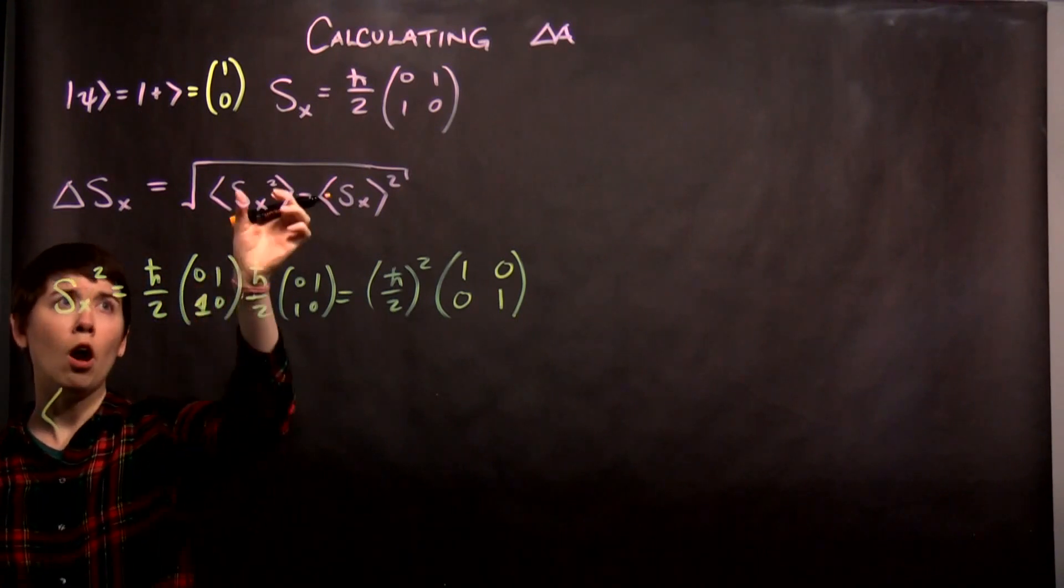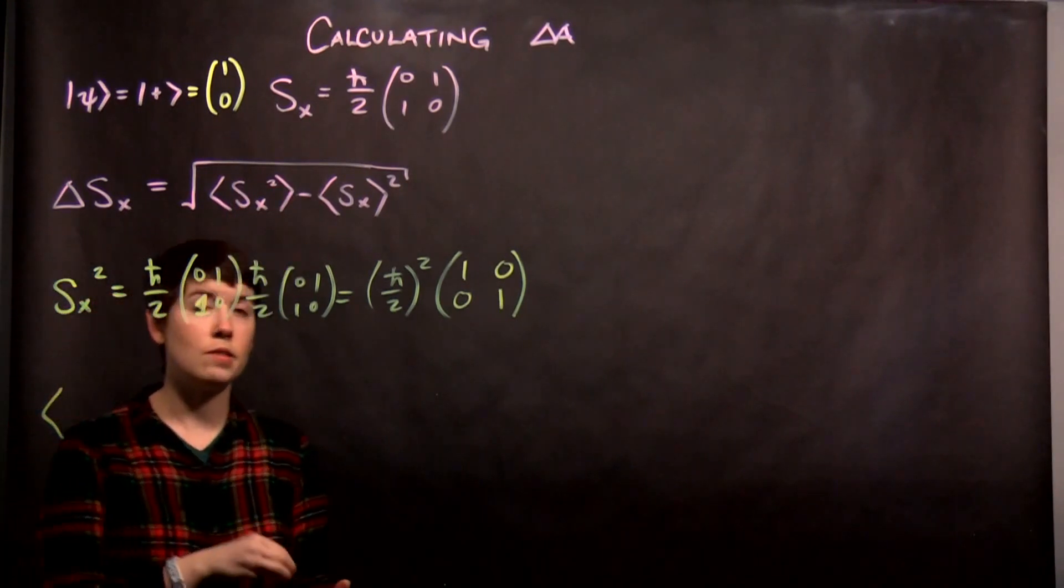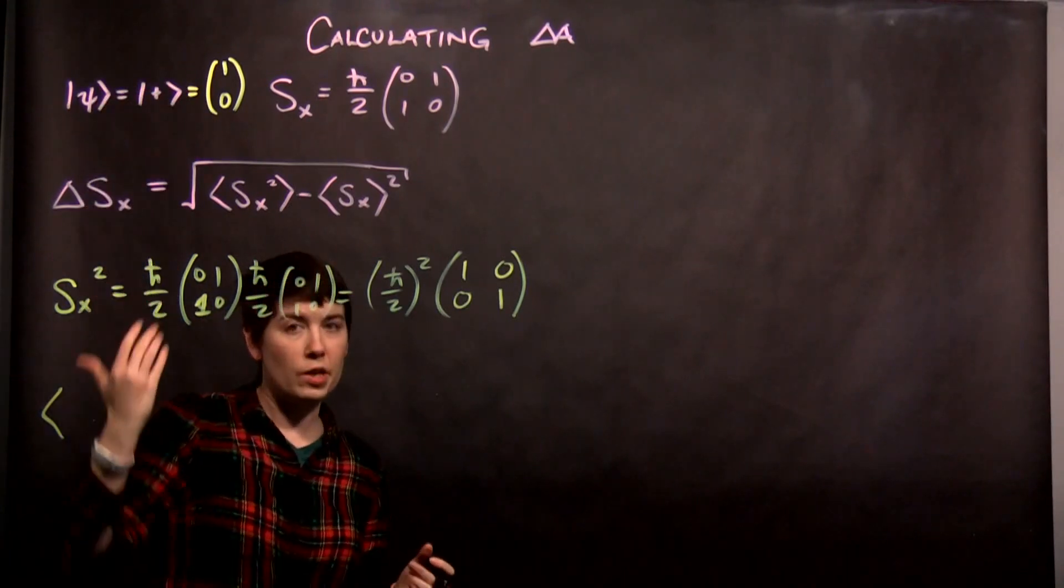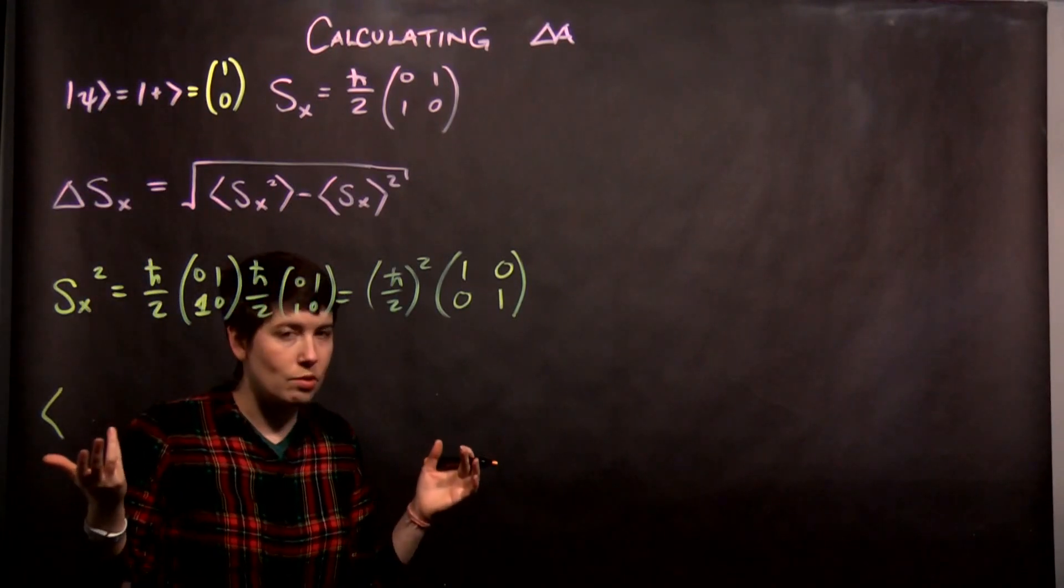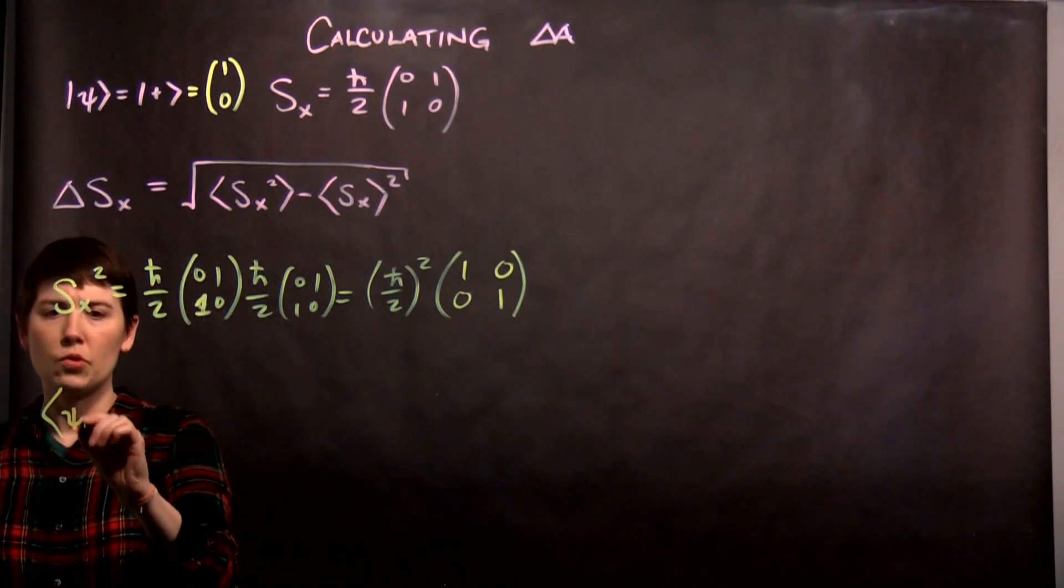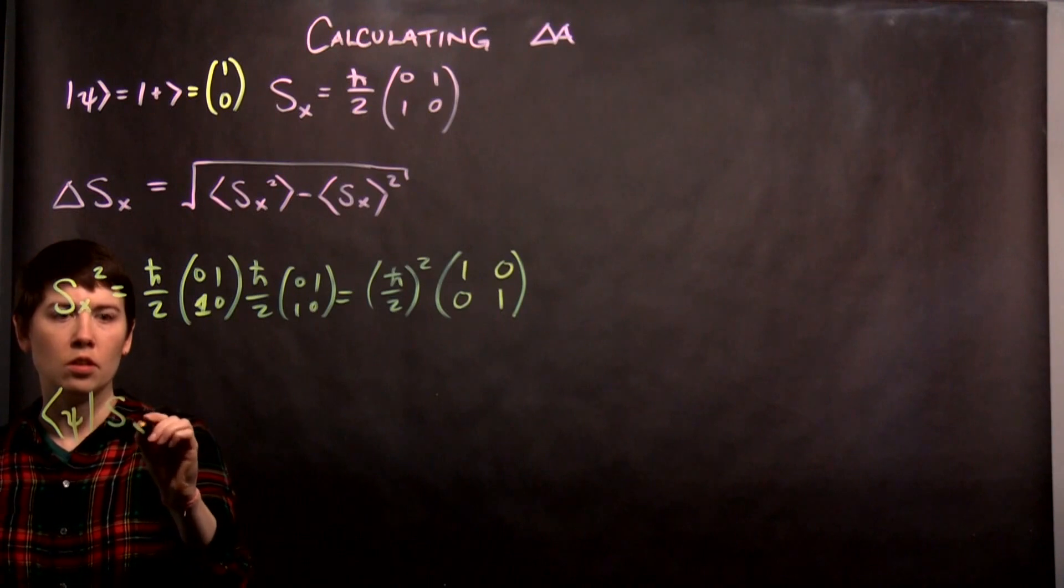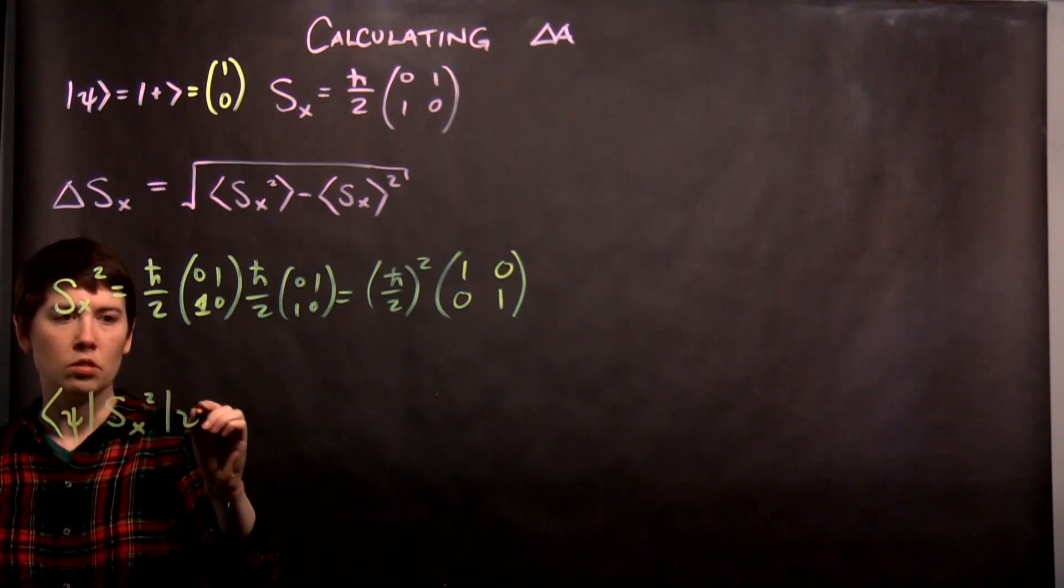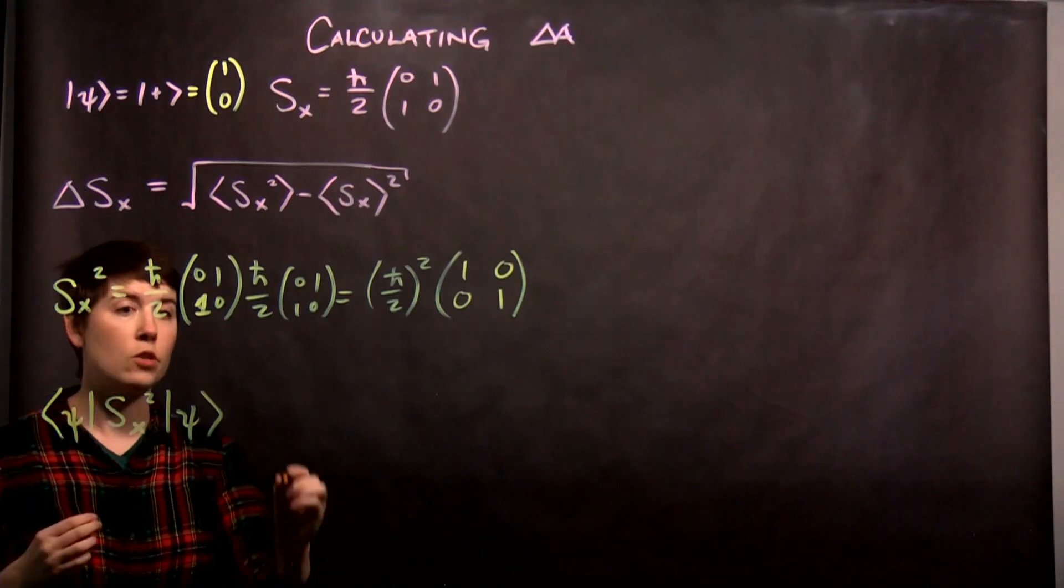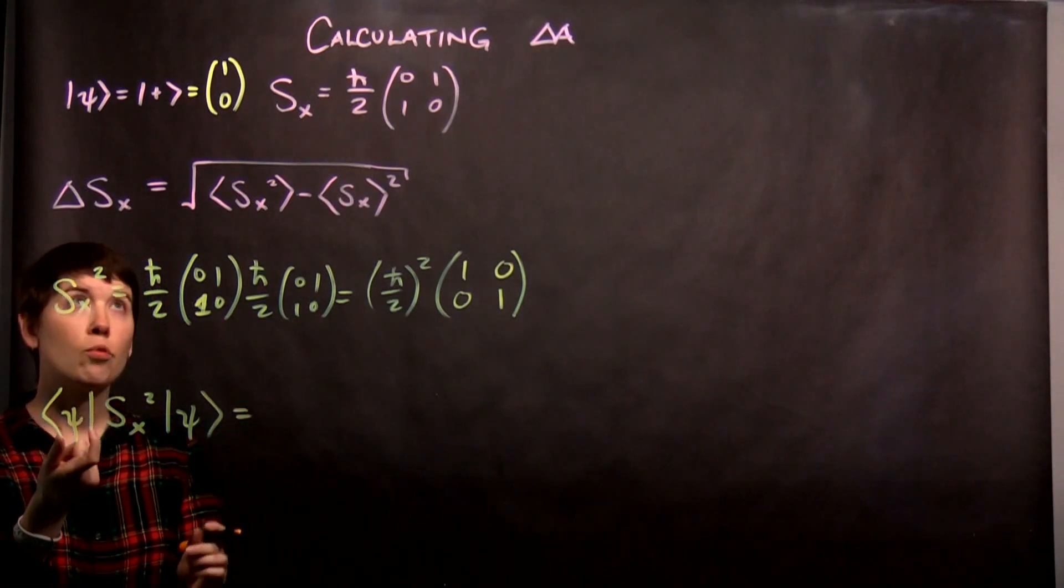So our expectation value here has to take a specific state. The state we're going to use here is spin up in z. It would be a more interesting calculation to use a different state, but let's do that for now. So when I have this object, which is the same as this, we're going to write this in matrix notation. So I have my bra here.